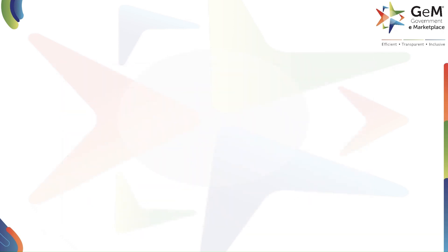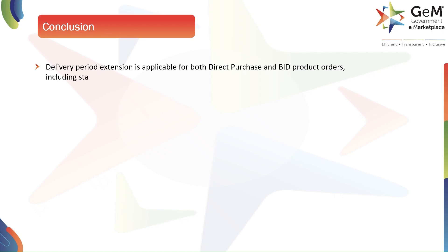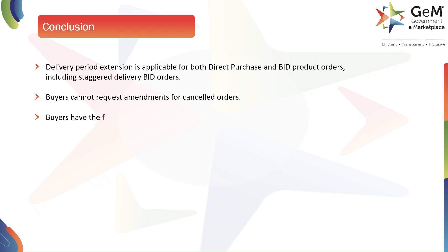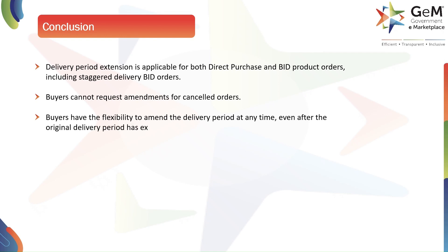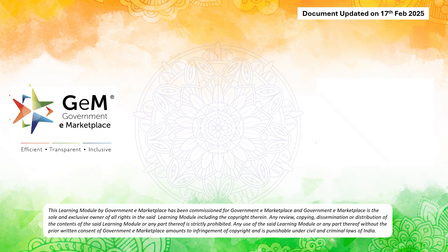To conclude: delivery period extension is applicable for both direct purchase and bid product orders, including staggered delivery bid orders. Buyers cannot request amendments for cancelled orders. Buyers have the flexibility to amend the delivery period at any time, even after the original delivery period has expired. Sellers cannot generate invoices once the delivery period has expired; they must request a delivery period extension to enable invoice generation. Thank you.